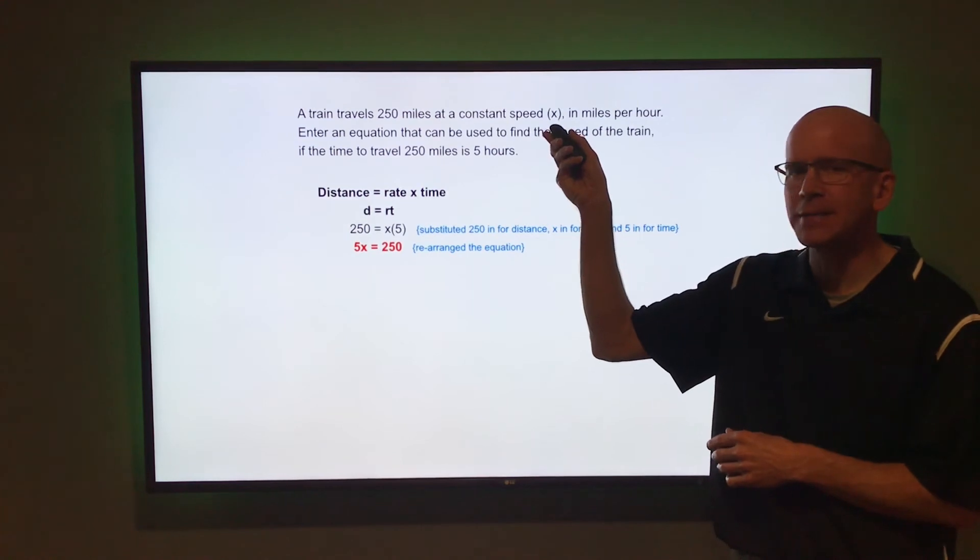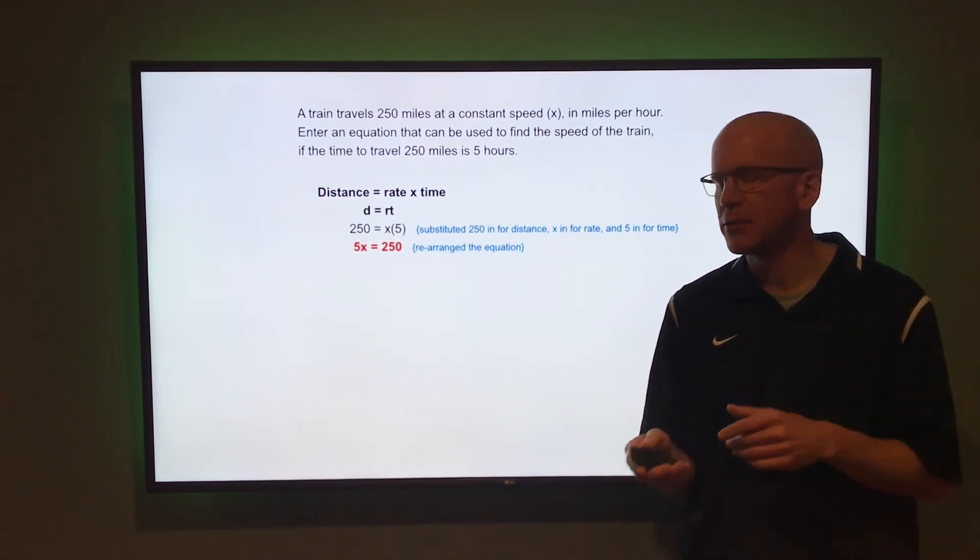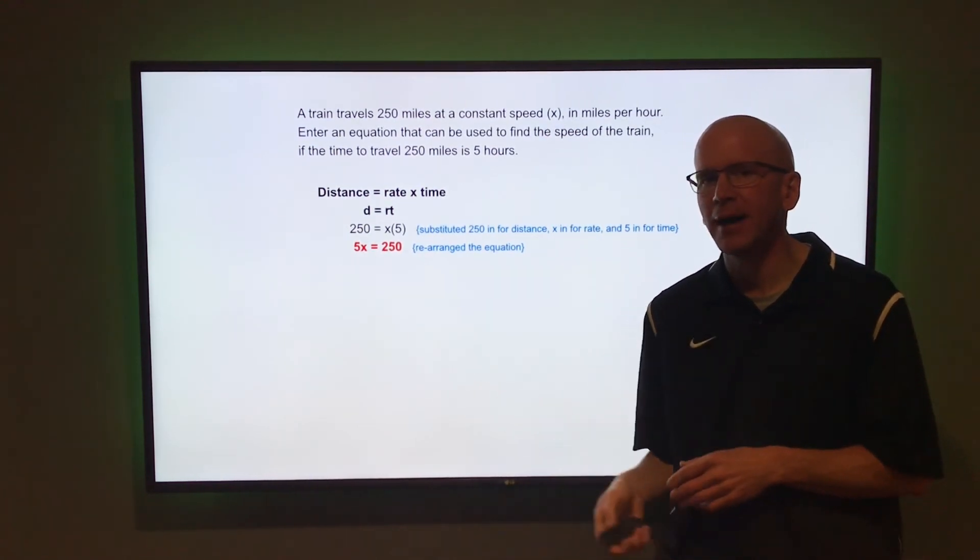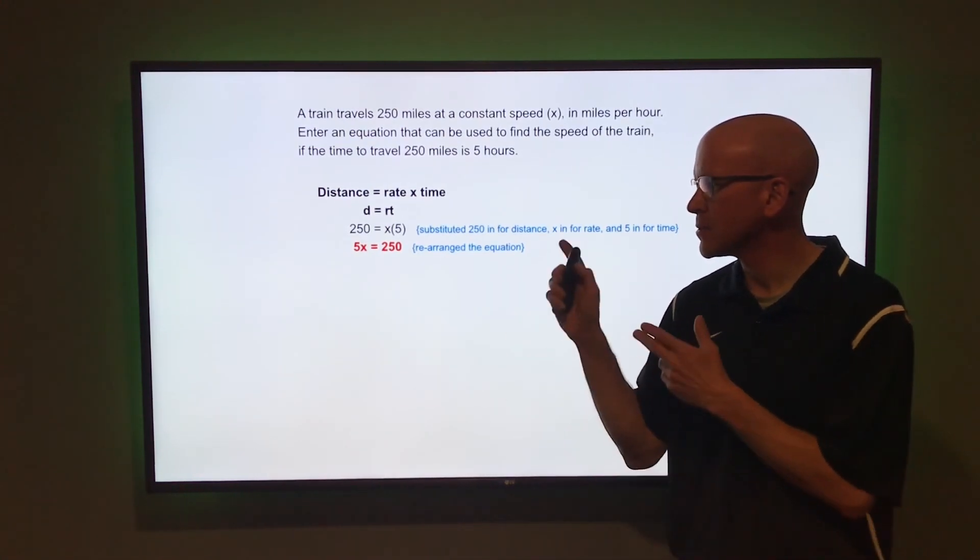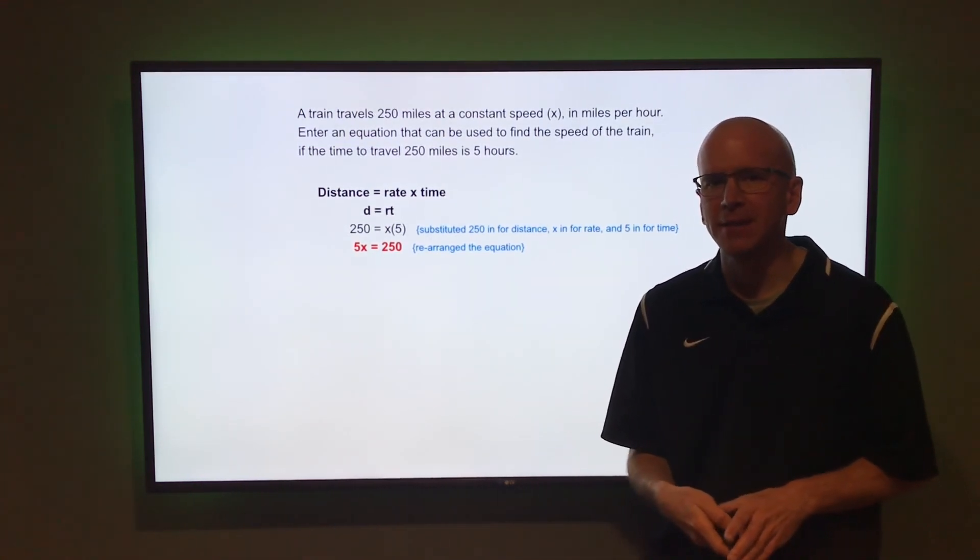Remember the speed of the train is x. So if you wanted to find the speed of the train, just divide each side by five. You find out that the train is going 50 miles per hour. So that is the equation you would enter: 5x equals 250.